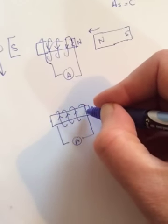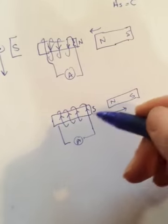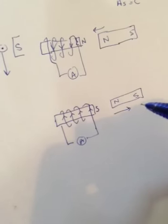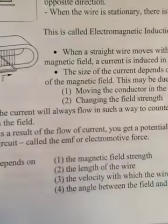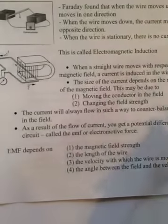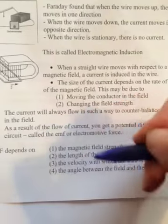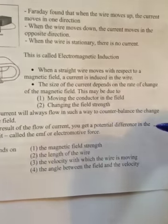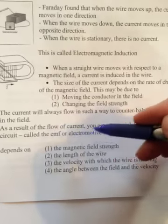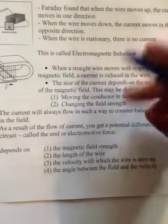So the electromotive force always induces a current in such a way to try to counteract the change in the field. And maybe I'll copy this page of notes and give it to you tomorrow when you're writing the test. So the current will always flow in such a way to counterbalance the change in the field that it's experiencing. And as a result of the flow of current, you get a potential difference in the circuit. And that potential difference is what we've been calling the electromotive force. We named it before we knew what it was.